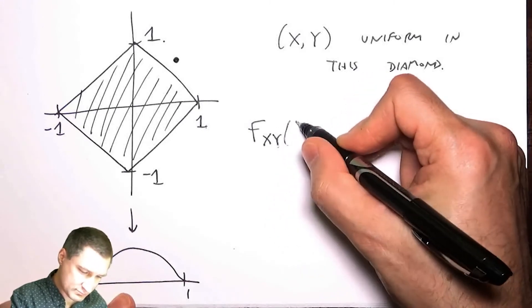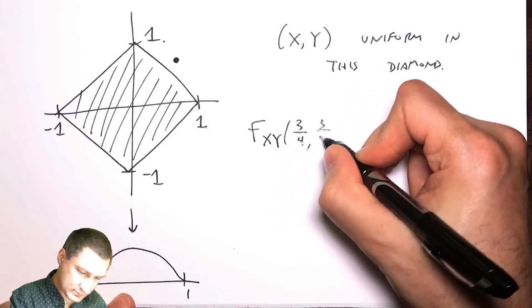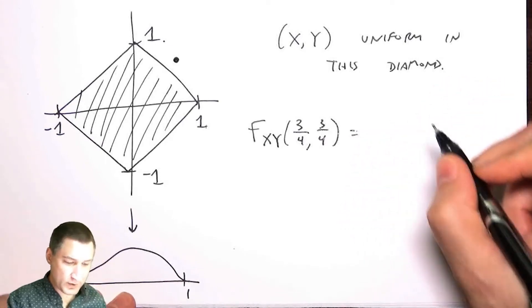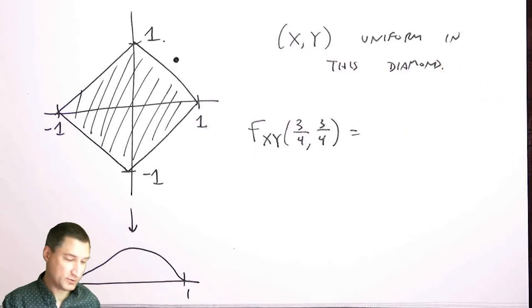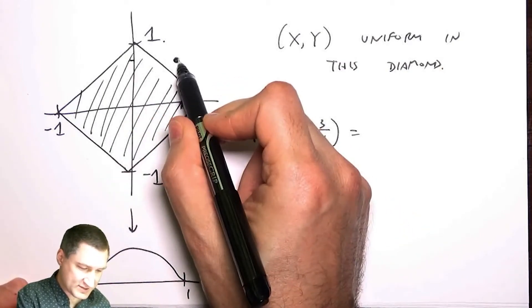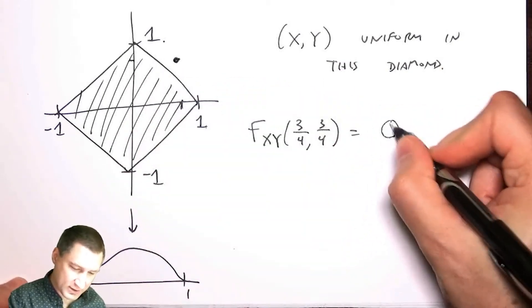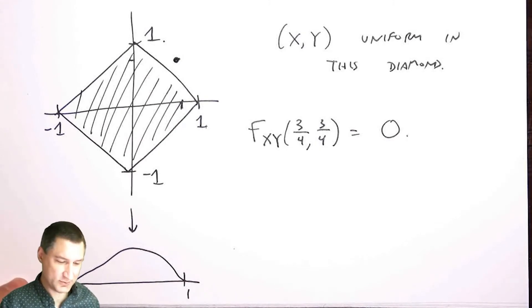three quarters comma three quarters. Well, this point is not possible to get in the joint random variable because three quarters comma three quarters is outside of this line, so this PDF value is zero.